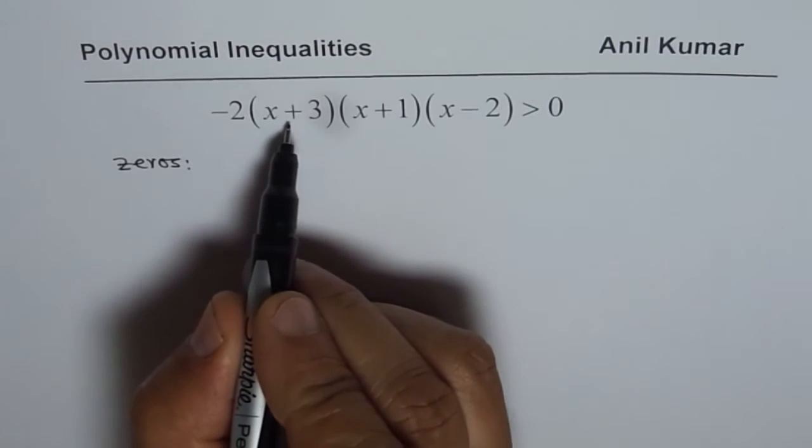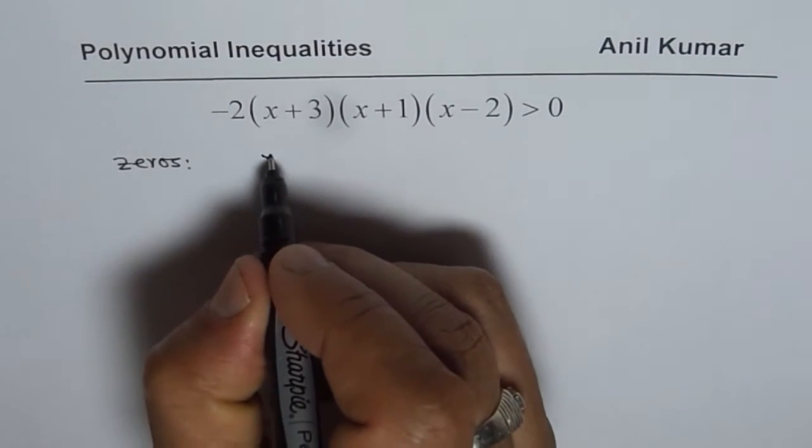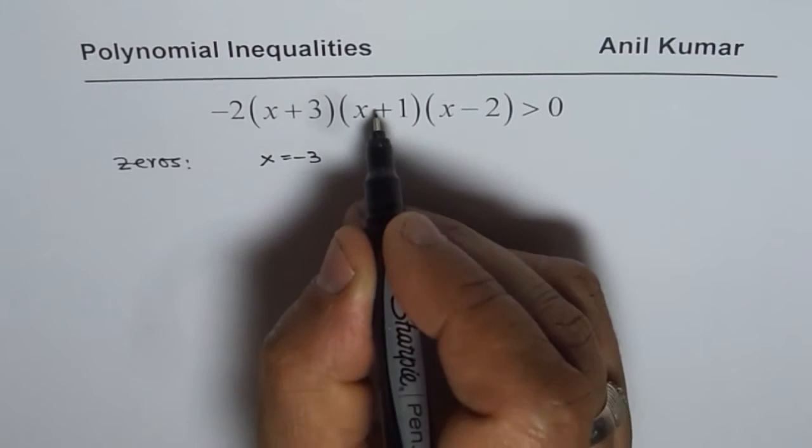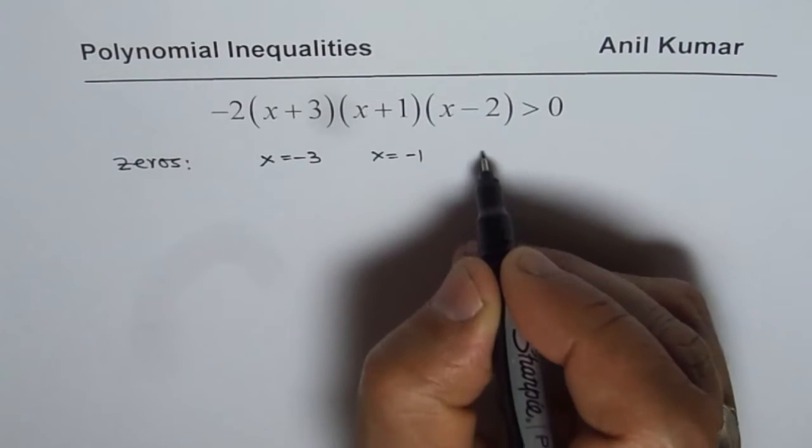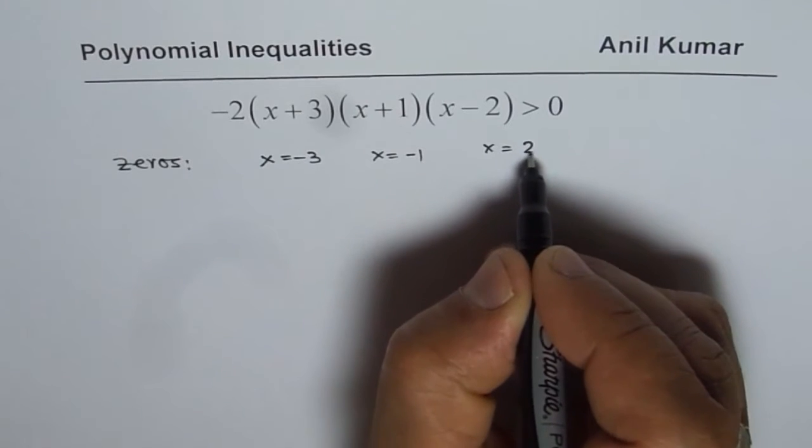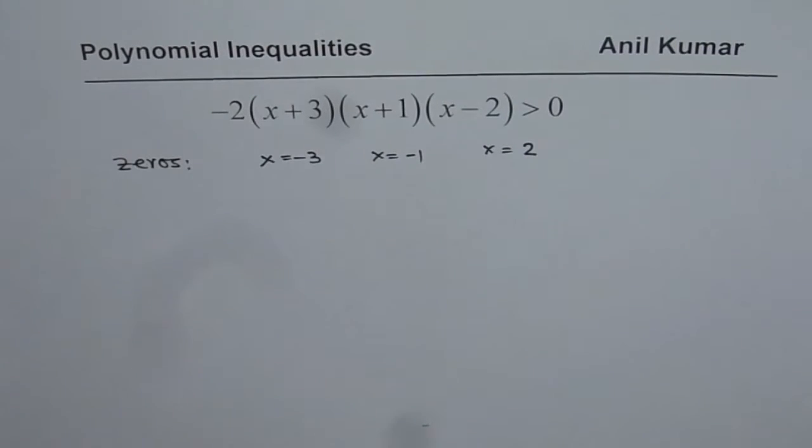So we have one zero at x equals minus 3, x equals minus 1, and at x equals 2. So we have three zeros.